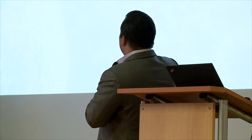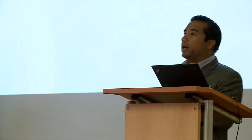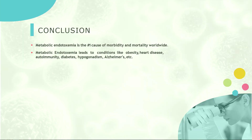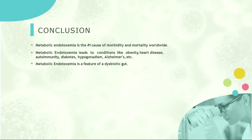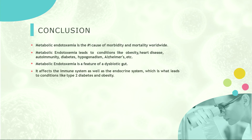Last slide: metabolic endotoxemia can be argued as the number one cause of morbidity and mortality worldwide. Many of the chronic diseases that kill us seem to have metabolic endotoxemia either associated with or described as the root cause — conditions like obesity, heart disease, autoimmune disease, diabetes, hypogonadism, Alzheimer's, and the list goes on. If you start searching studies on metabolic endotoxemia, you'll end up in a rabbit hole of tens of thousands of papers. Metabolic endotoxemia is a feature of a dysbiotic gut — this phenomenon of increased circulatory LPS postprandially starts with dysbiosis in the microbiota, which plays a significant role in protecting us against it.